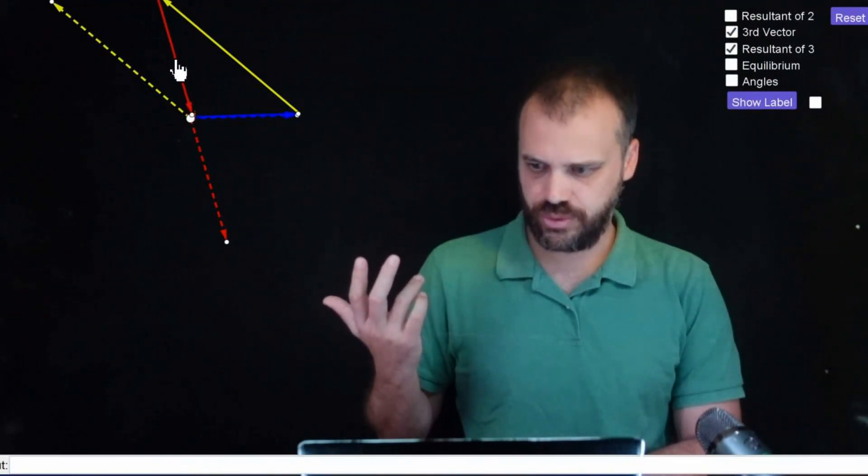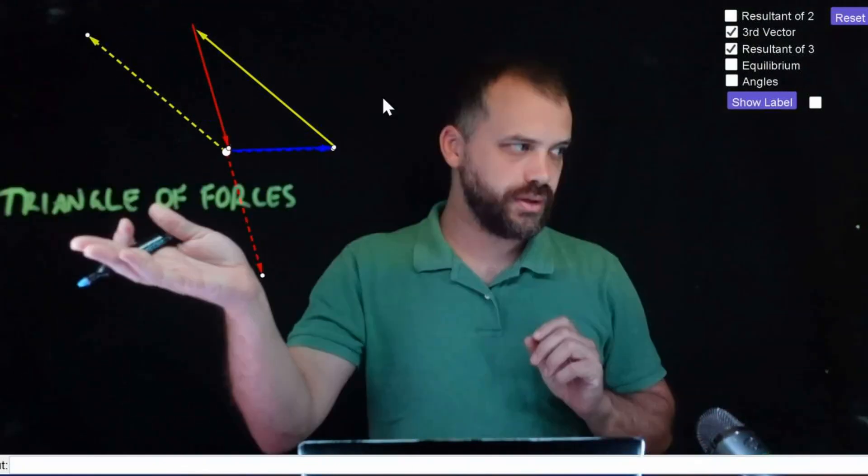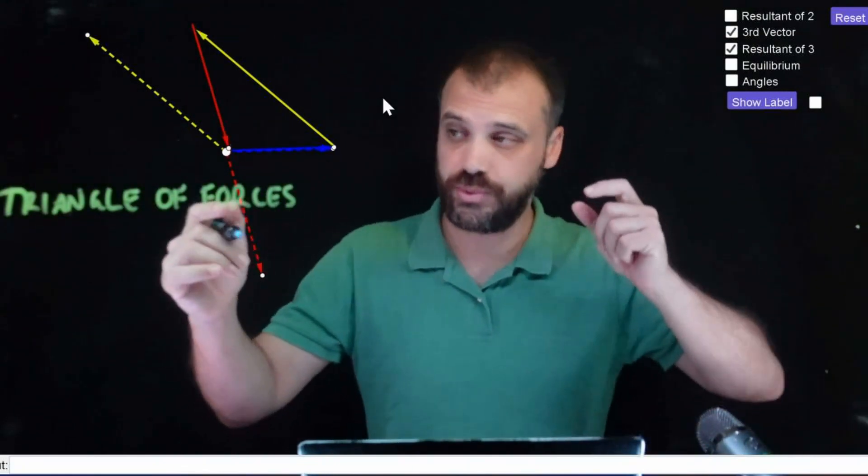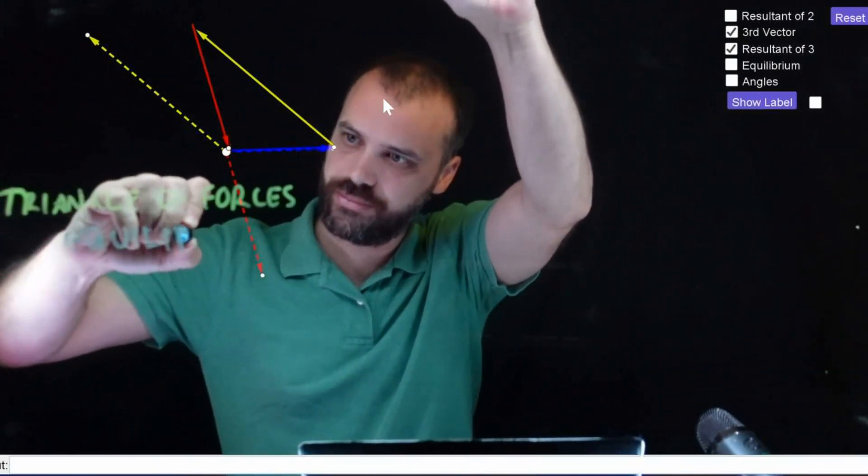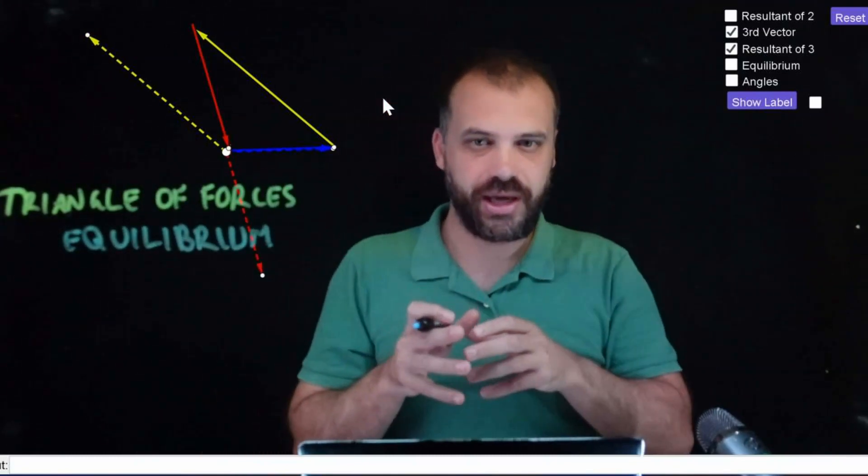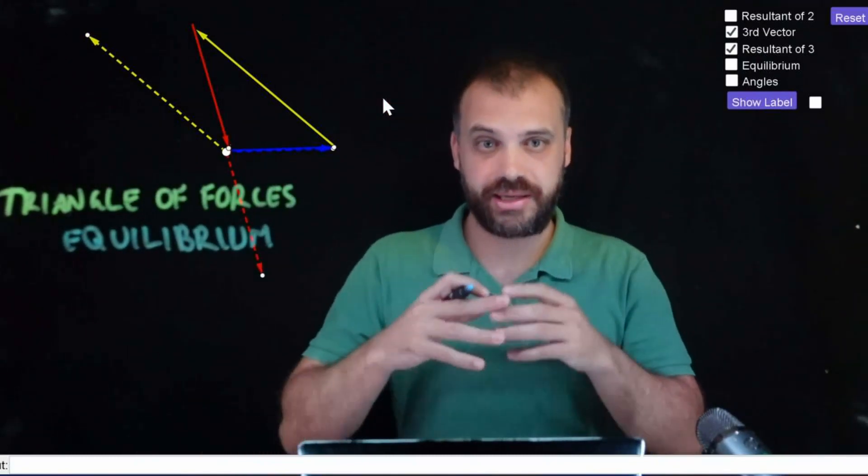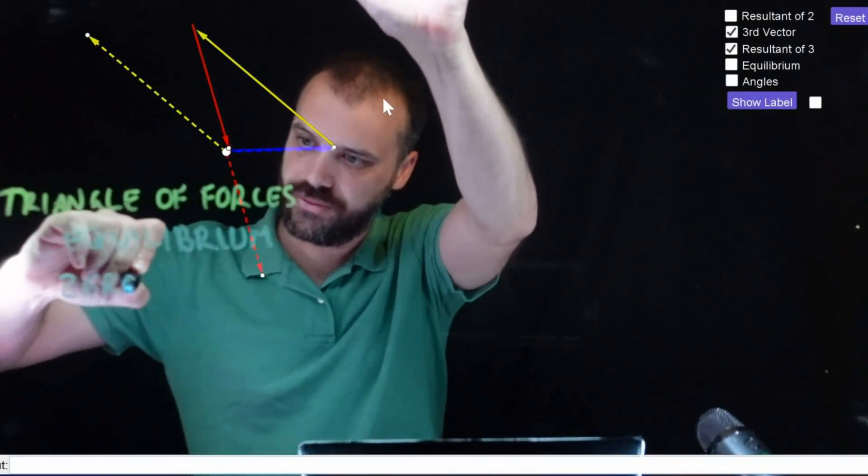That is what we're going to call a triangle of forces. Now, a triangle of forces happens when the object is in equilibrium. All forces on it add together to make zero. We get a zero vector.